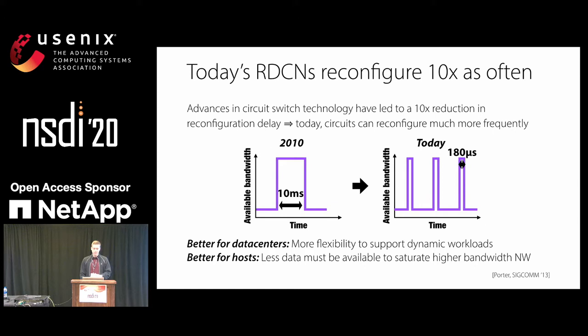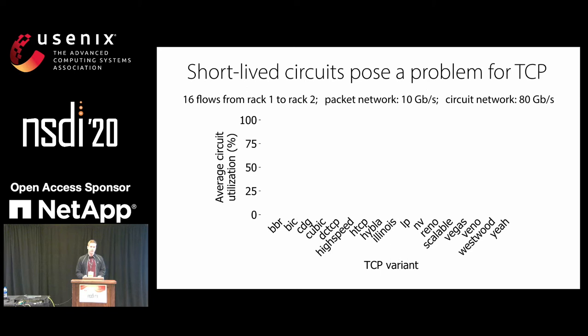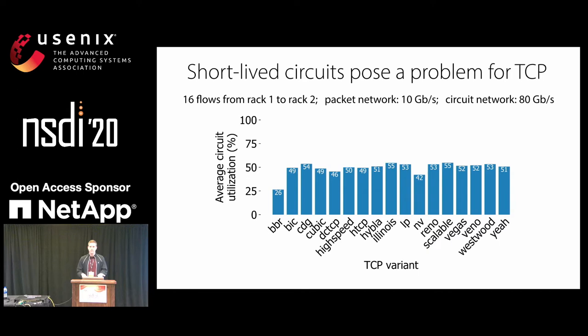However, this new trend has posed a problem for TCP. We ran an experiment on an emulator sending 16 long-lived flows from one rack to another, with a packet network of 10 gigabits per second and a circuit network of 80 gigabits per second. We looked at average circuit utilization for a whole bunch of TCP variants, and none of them were able to achieve more than about 55% circuit utilization.